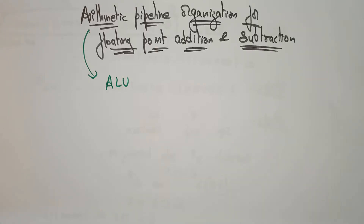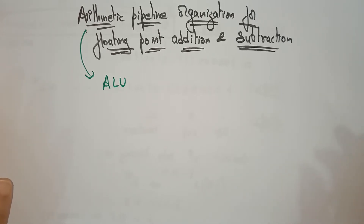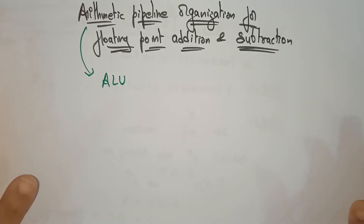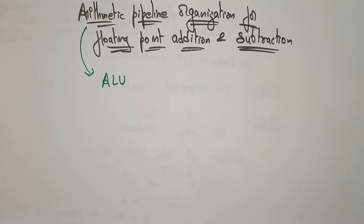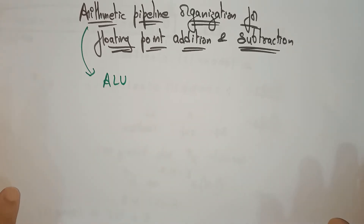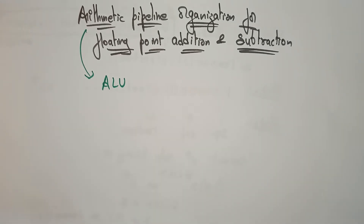Welcome back. Let's continue with our arithmetic pipeline organization. In the previous video, I gave an introduction regarding computer arithmetic principles, where we had seen about fixed point and floating point representation. Now let's have a look at what is arithmetic pipeline organization for floating point addition and subtraction, and how it is going to be organized — that you are going to learn in this video with an example.